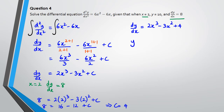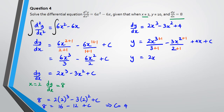To find y, we integrate dy/dx once more. Integrating 2x³ gives 2x⁴/4, integrating 3x² gives 3x³/3, and integrating 4 gives 4x, plus a new constant c. So y = x⁴/2 − x³ + 4x + c.